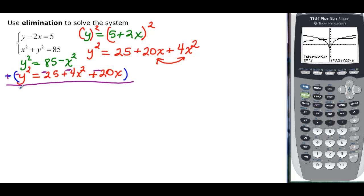So, y² plus negative y² is 0. 85 plus a negative 25 is going to be 60. Negative x² and a negative 4x² will be minus 5x². And then minus 20x because there's nothing to combine with that one. And you can see that we have a quadratic. If it helps you, we could say -5x² - 20x + 60. It's a positive 60 there.